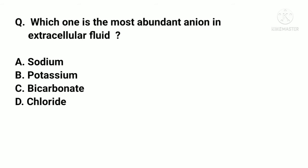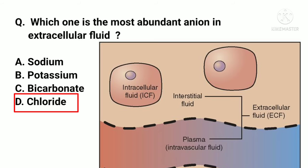Which one is the most abundant anion in extracellular fluid? Options: A. Sodium, B. Potassium, C. Bicarbonate, D. Chloride. The correct answer is D. Chloride. In extracellular fluid, the major anion is chloride and the major cation is sodium. In intracellular fluid, the major anion is phosphate and the major cation is potassium.